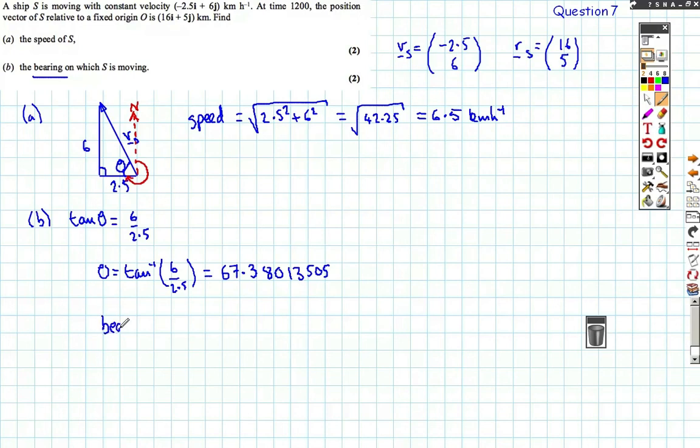So to find the bearing, I need to, it's equal to the answer I got plus 270 degrees. So when I did that, that comes out as 337 degrees to the nearest degree. And that's good enough accuracy for this question. Usually three significant figures, but bearings we can do to nearest degree. Okay, so not that bad, not a bad start for four marks.